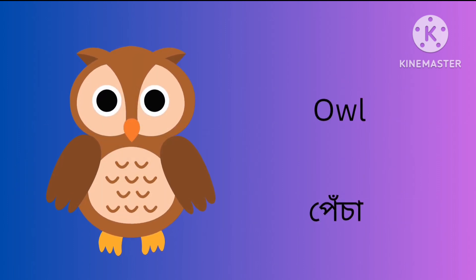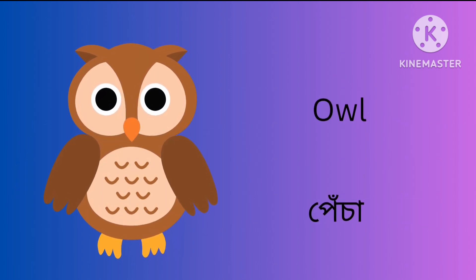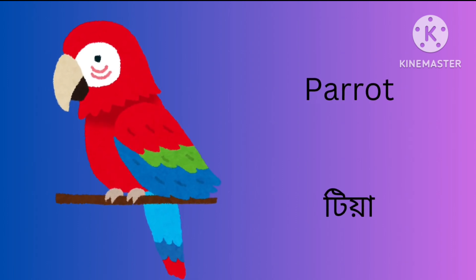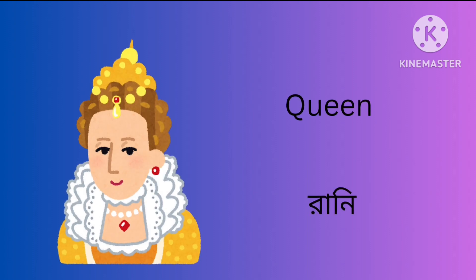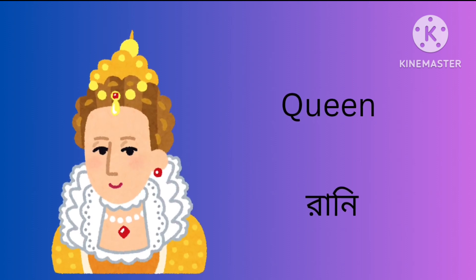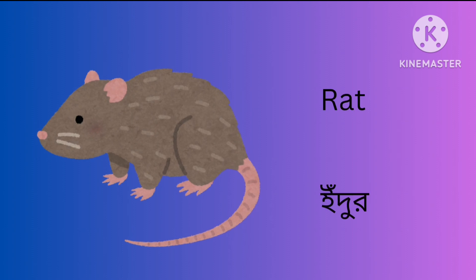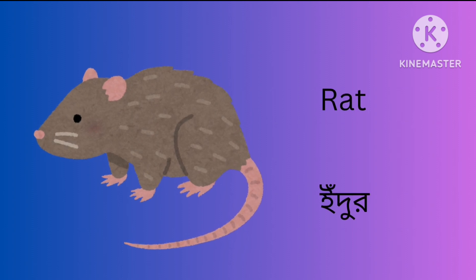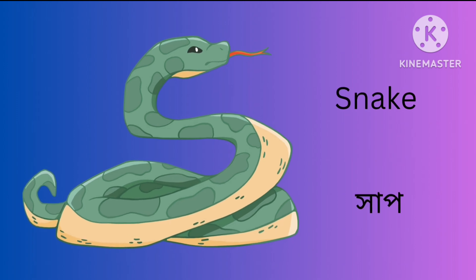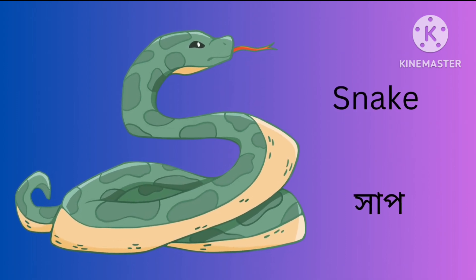O for Owl. P for Parrot. Q for Queen. R for Rat. S for Snake.